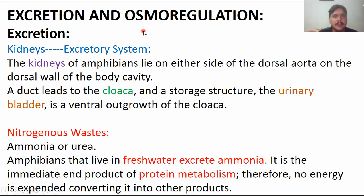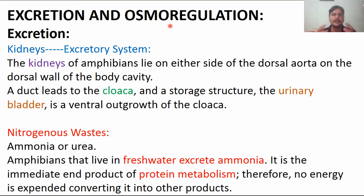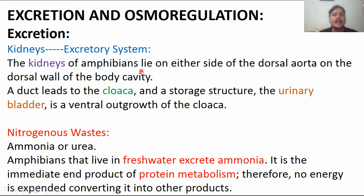The first topic is excretion and osmoregulation. Excretion is basically the removal of nitrogenous waste from the body of an organism. Osmoregulation is the mechanism to maintain the solute and solvent concentration inside the body of a living organism. In amphibians, the kidneys serve as the excretion system. The kidneys lie on the sides of the dorsal aorta, or dorsal body wall.